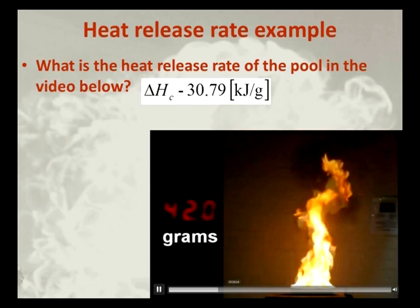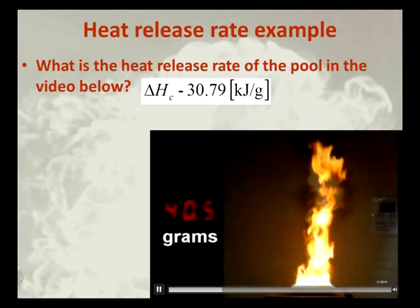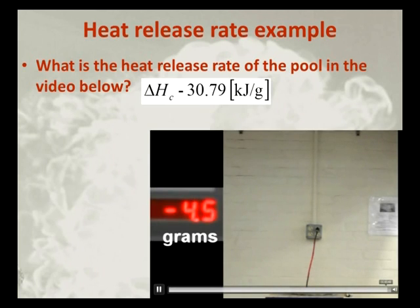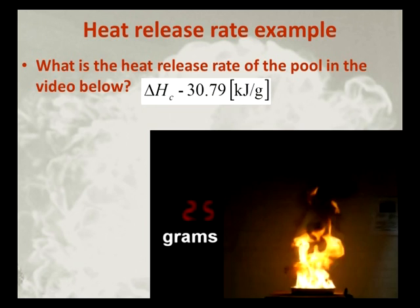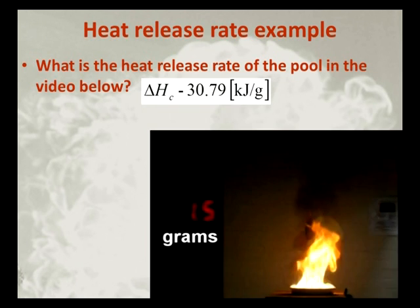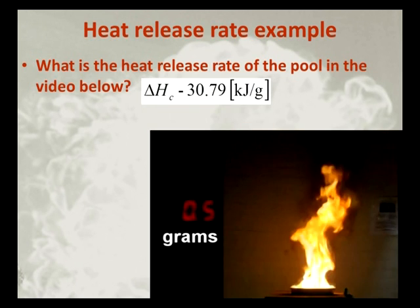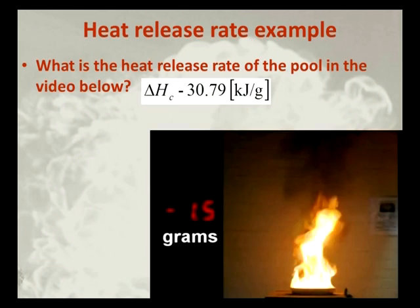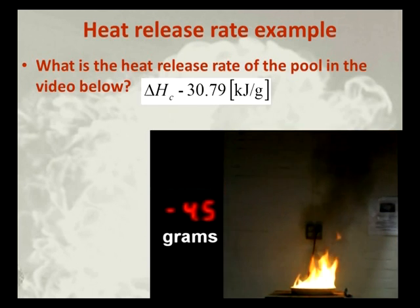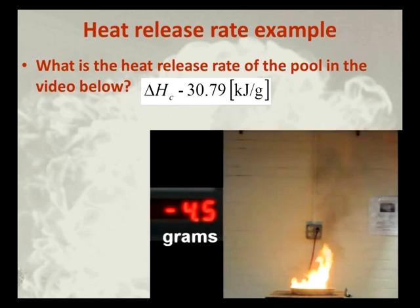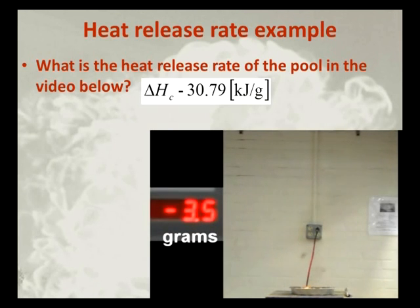So we started with 53 grams, and we're going to let this burn for 150 seconds. The negative number comes from the miscalibration of the load cell not having the actual negative mass in the pan. So we go from 53 grams to negative 4 grams, and that takes one minute and 50 seconds.